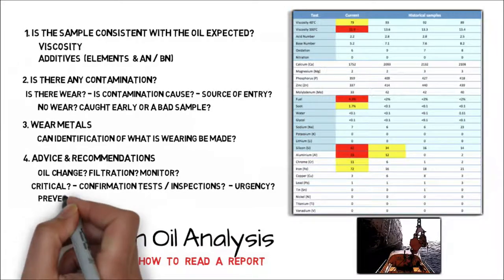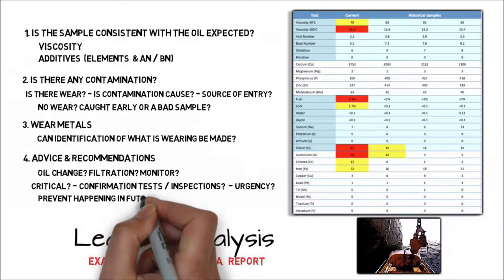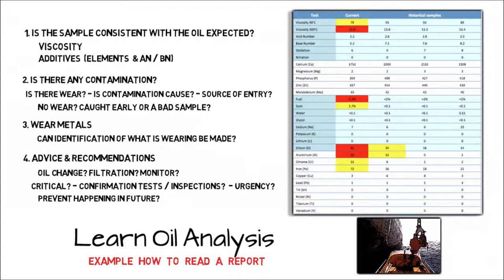I also look at what actions can be done to prevent future problems for the client for when failure is not an option. These may include changes such as upgrades to test suites to add extra tests, more frequent sampling, sampling other fluids such as coolant or fuel on engines as supporting evidence, changes to clients condemning limits, changes to oil drain intervals.